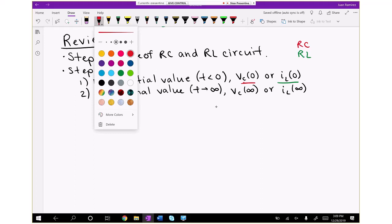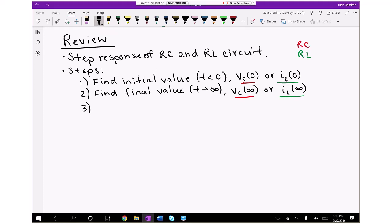Now we go to step three, in which we find the Thevenin resistance connected to or seen by the capacitor or inductor in the final state.